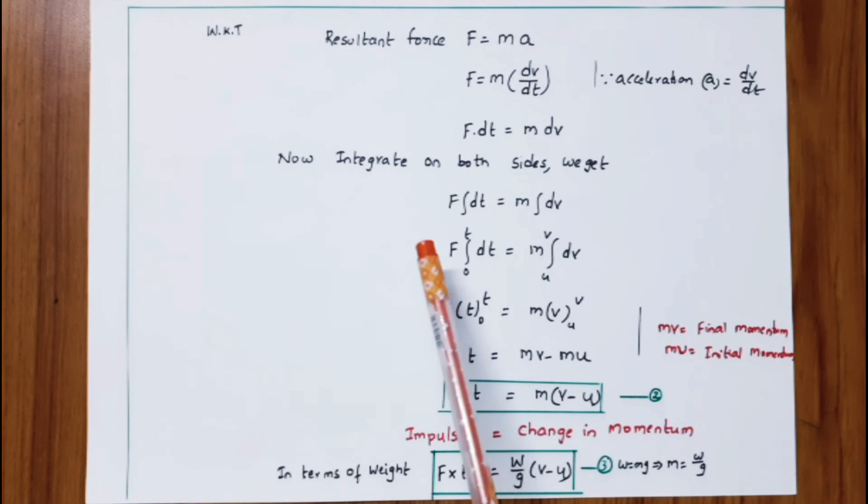Now integrate on both sides. F × ∫dt = m × ∫dv. The limits for time are 0 to t, and the limits for dv are initial velocity to final velocity. The integral of dt is t, so F × t (limits 0 to t) equals m times the integral of dv, which is v (limits u to v).